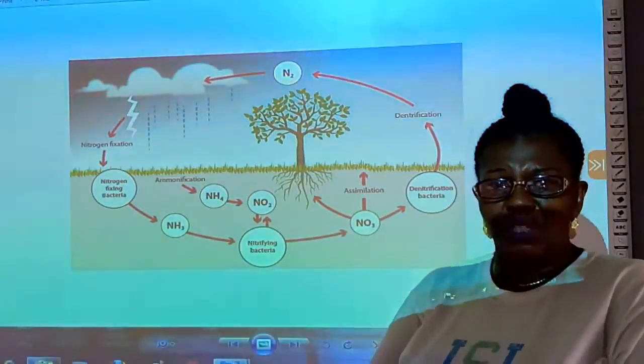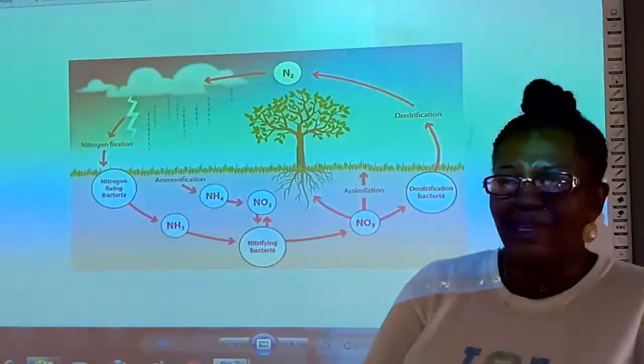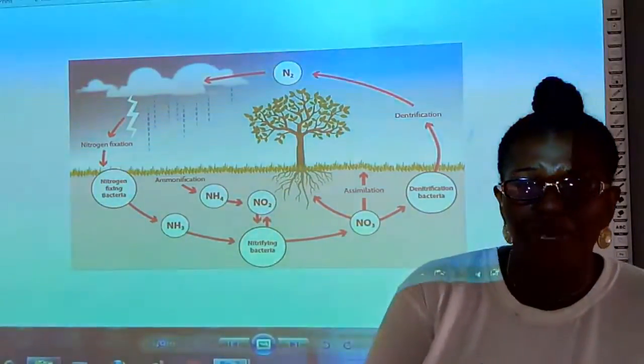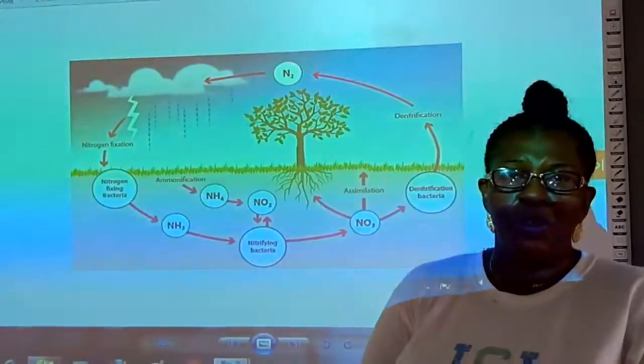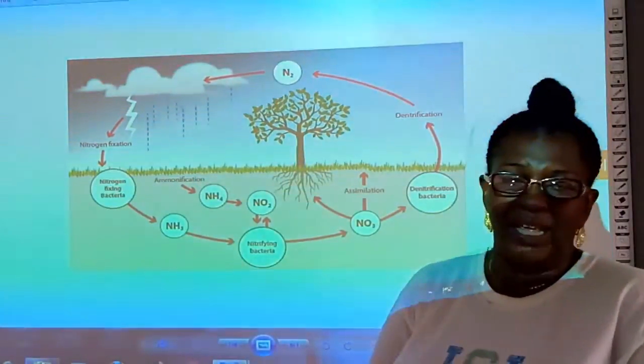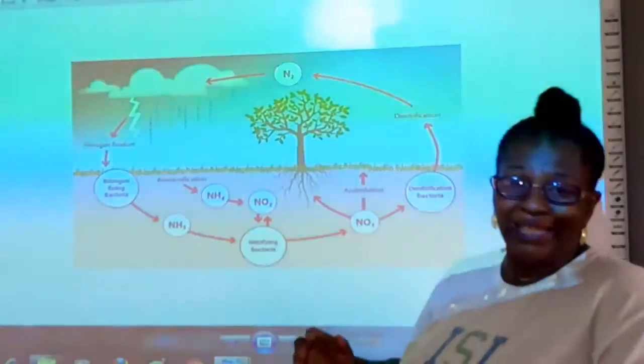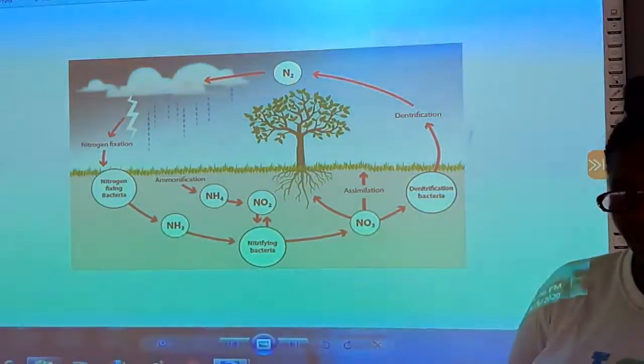Because ammonia is released when the plants or the animals die or from their urine or their feces, for example. So, that's the second stage, putrefaction.